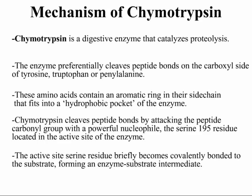We will now study the enzyme chymotrypsin, which uses some of the catalytic functions we've just discussed. Chymotrypsin is a digestive enzyme that catalyzes proteolysis of peptide bonds. The enzyme preferentially cleaves peptide bonds on the carboxyl side of tyrosine, tryptophan, and phenylalanine — amino acids containing aromatic rings in their side chains. During catalysis these aromatic rings fit into a hydrophobic pocket of the enzyme. Chymotrypsin cleaves peptide bonds by attacking the peptide carbonyl group with a powerful nucleophile, the serine 195 residue located in the active site.